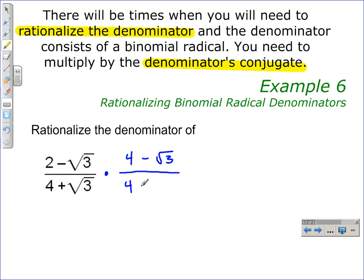We do that by multiplying, in essence, by 1. Now, 4 minus the square root of 3 divided by 4 minus the square root of 3 is by definition 1, so we're not really changing the value of the original expression. We are just changing how it looks by multiplying by the conjugate. We're rationalizing the denominator.